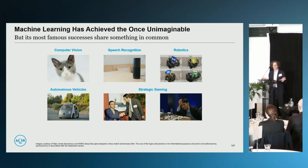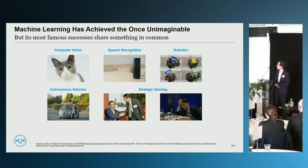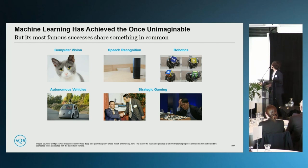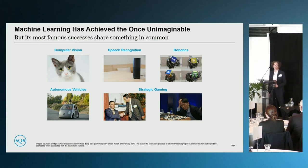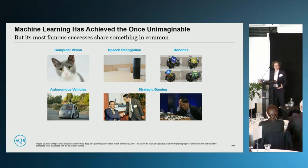Machine learning has had massive, famous successes in a variety of areas — from identifying pictures of cats to speech recognition, applications in autonomous driving, and more than 25 years ago IBM's Deep Blue beat world chess champion Kasparov. There are plenty of varied examples where machine learning has been famously successful.